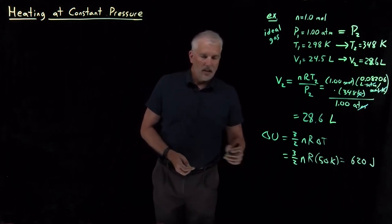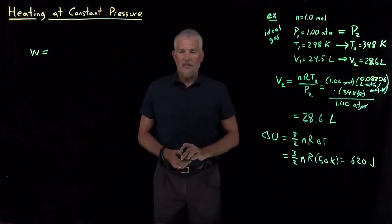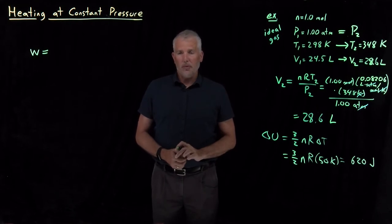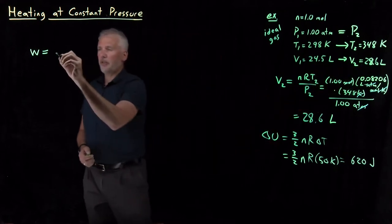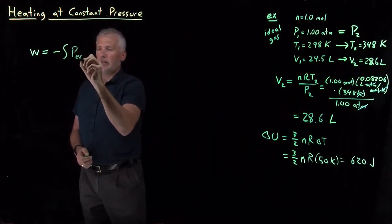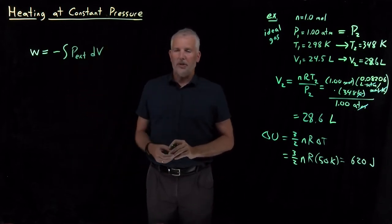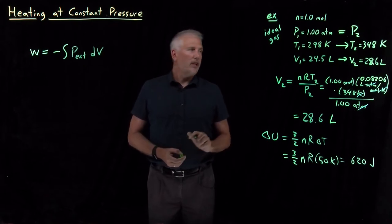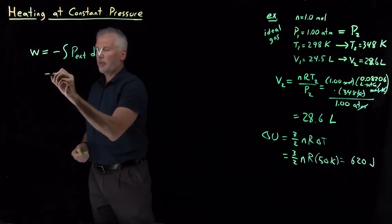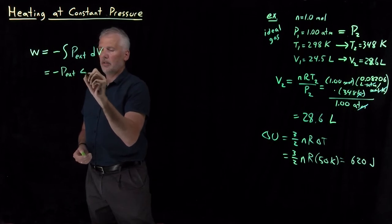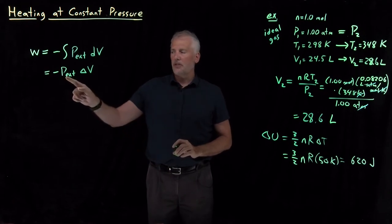For the constant volume process, the work turned out to be zero because we weren't changing the volume—we weren't doing any PV work. In this case we are changing the volume, so we do have to calculate something. If we go back to our definition of PV work, negative integral of P_external dV, P is constant so we can pull the pressure out of the integral. dV integrates to just ΔV, so because it's a constant pressure process, I can use minus P_external ΔV.